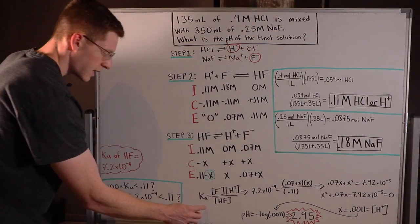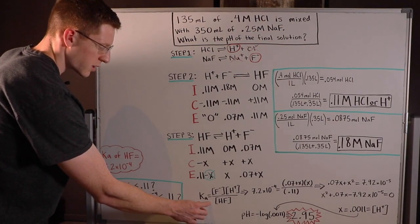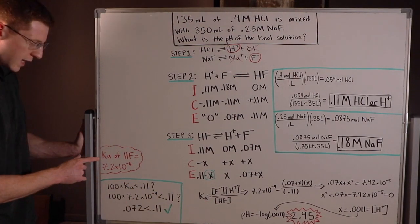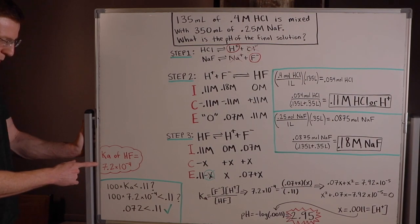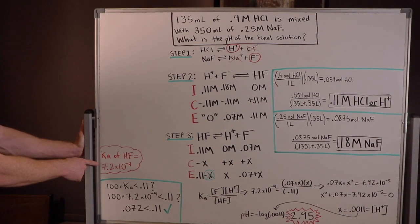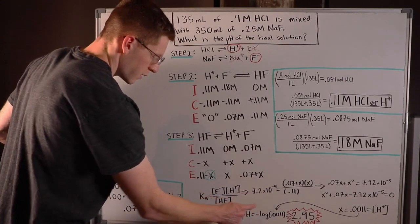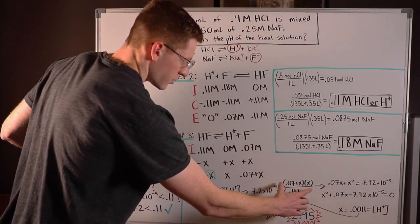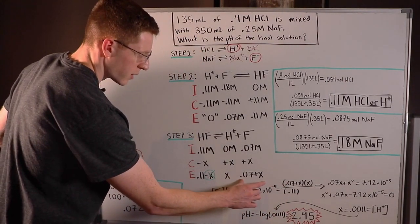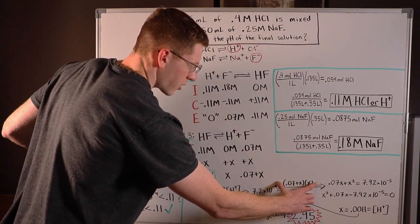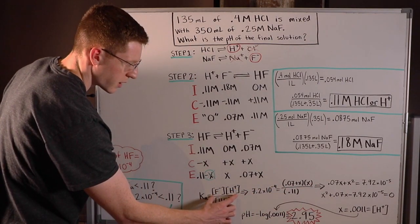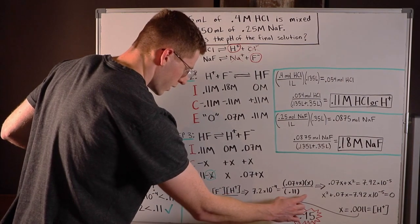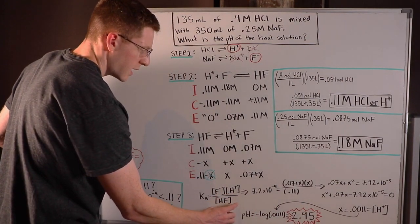So you should have access to a Ka table if you're doing this problem. And you'll find that the Ka of HF is 7.2 times 10 to the negative four. So I went ahead and plugged that in for my Ka. And then I plugged in X and 0.07 plus X for my product concentrations, F minus and H plus, and then 0.11 for my reactant concentration, HF.